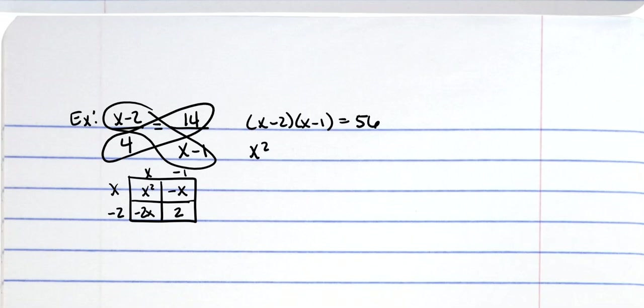So x squared, and then we have both of these that are x's—negative 2x minus x is negative 3x—and then a plus 2 is equal to 56. Subtract 56 from both sides and we end up with x squared minus 3x minus 54.